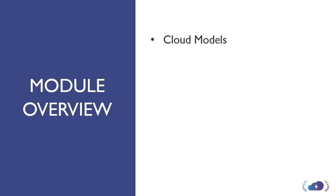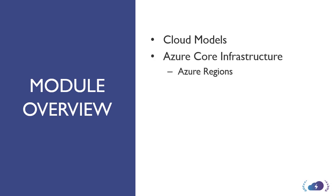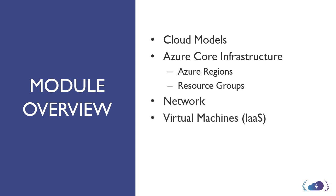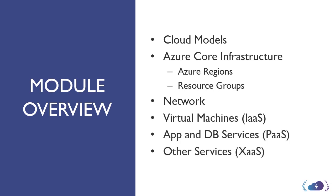The cloud models that you need to be aware of, that you may have heard about already in the industry. Azure's core infrastructure, including Azure regions and what you need to know about resource groups, which we'll use throughout the course. Networking, virtual machines, App and DB services, as well as some of the other services available in Azure. Finally, ending off with the Azure portal itself and how you can get around the portal and access Azure.